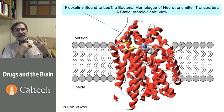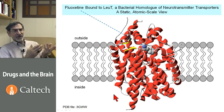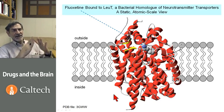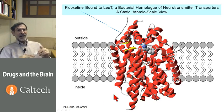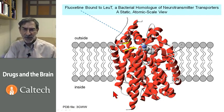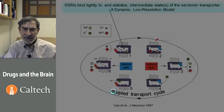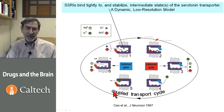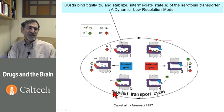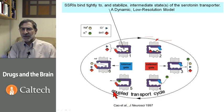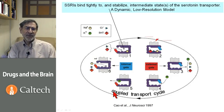This is an atomic scale view, but it's a static view, and it doesn't give us the alternating access view. So let's look at some experiments that my group did several years ago trying to flesh out the alternating access model in a dynamic view.